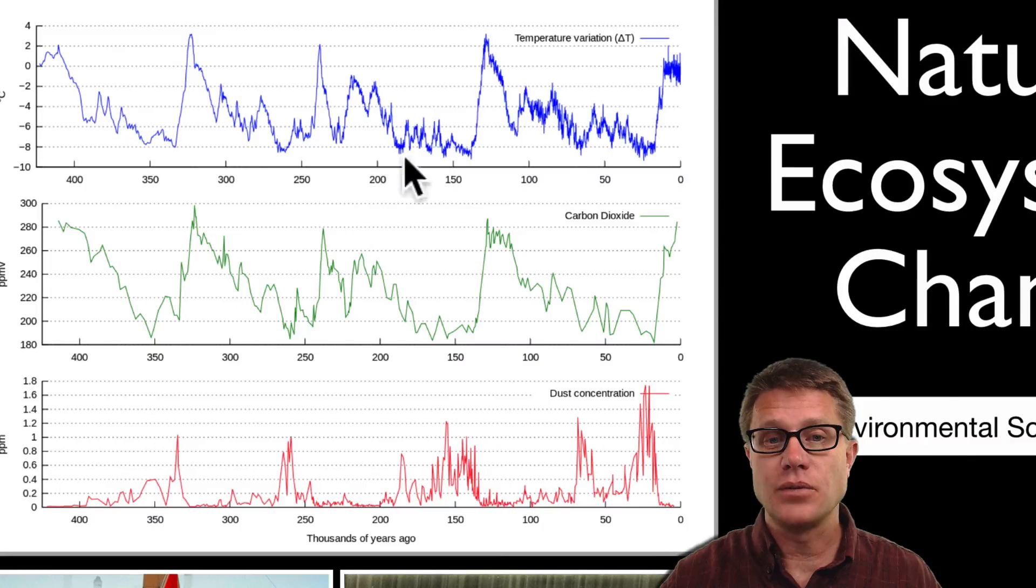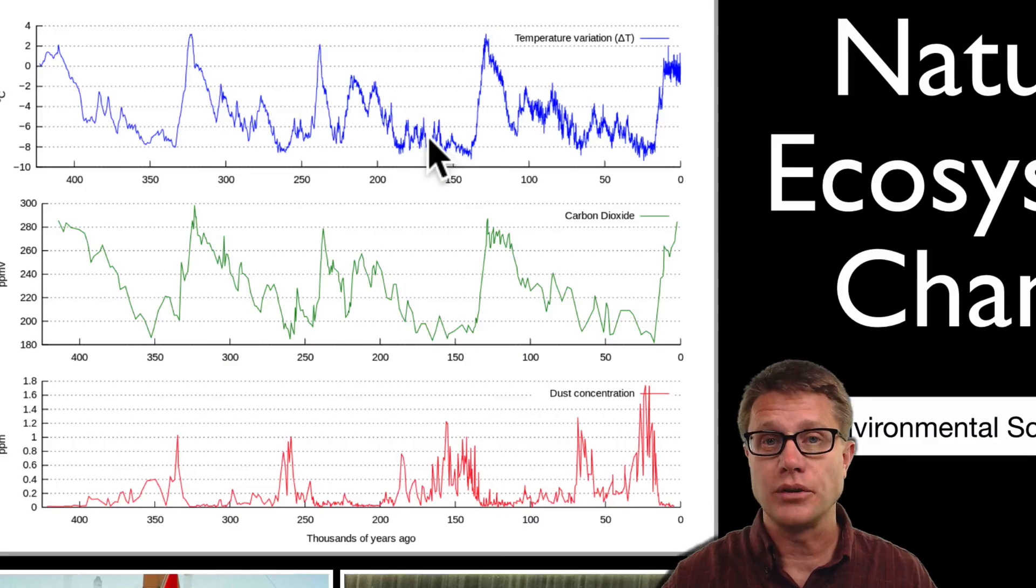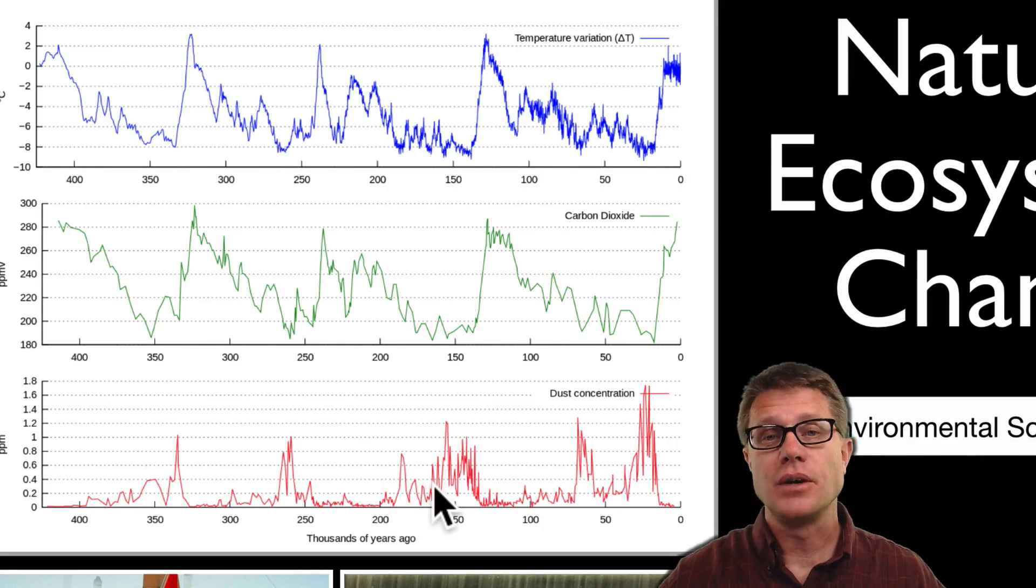Now that corresponds with temperature changes. So we have had periods of time where it is warmer and what are called ice ages where it is much colder. Now the ice ages actually correspond with high dust concentrations in the ice core because during ice ages we also have these massive deserts on our planet.